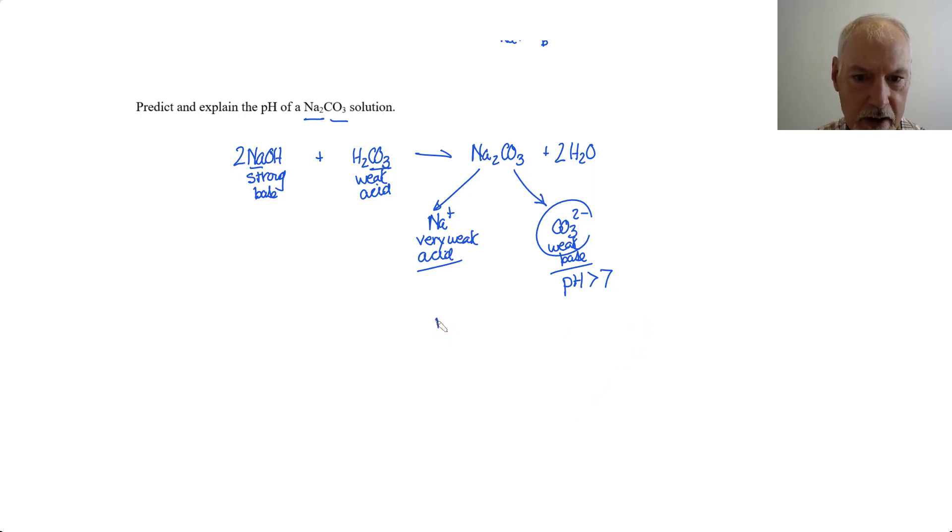Just to show you the reaction that goes on here, our water is capable of reacting with that carbonate ion. That carbonate ion is able to accept a proton and therefore form the bicarbonate ion. Now that would now be 1-. And we would then produce the hydroxide ion, and there would be the basic nature of my solution.